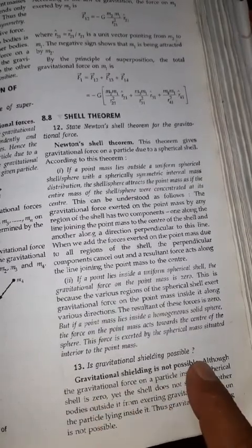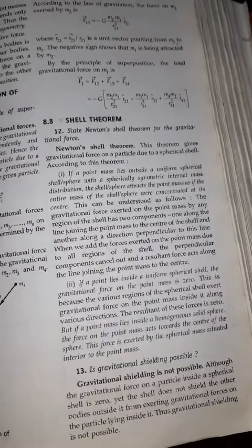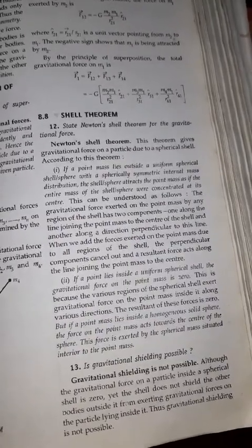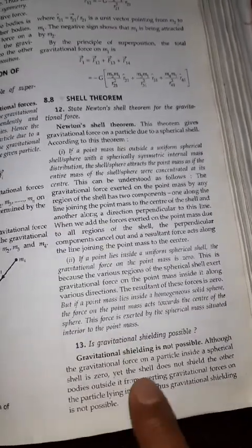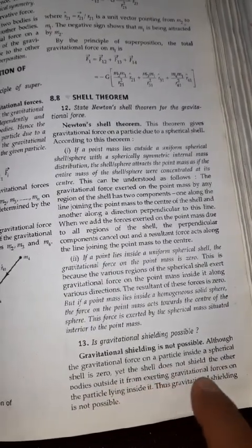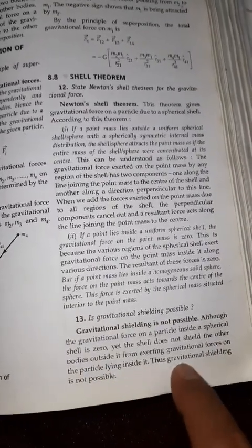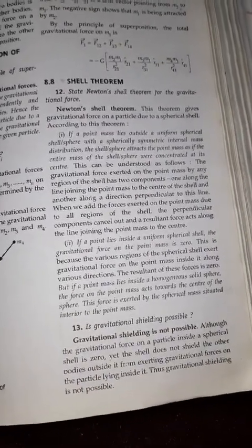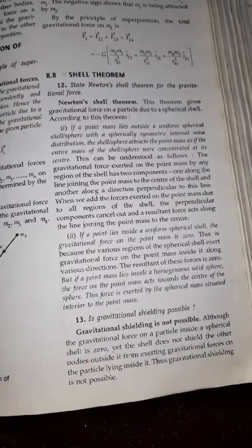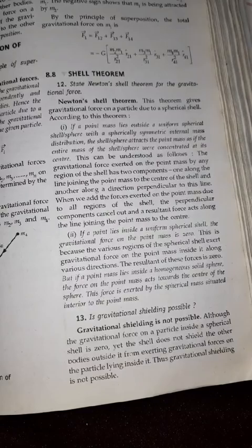And gravitational shielding possible? Shielding means can the gravitational force be protected, understood? So same way, shell does not shield the bodies outside it from the gravitational force on the particle lying inside it. Thus gravitational force shielding is not possible, though shielding is possible in electrostatic force. So that's all for today. Have a great time. Thank you.